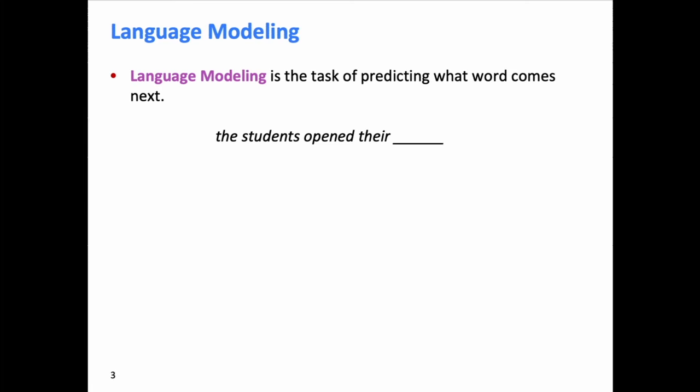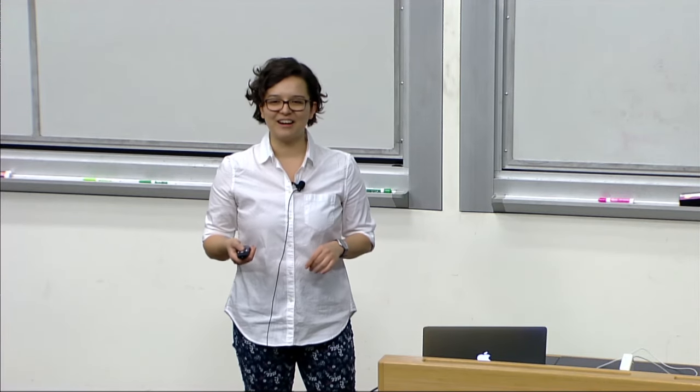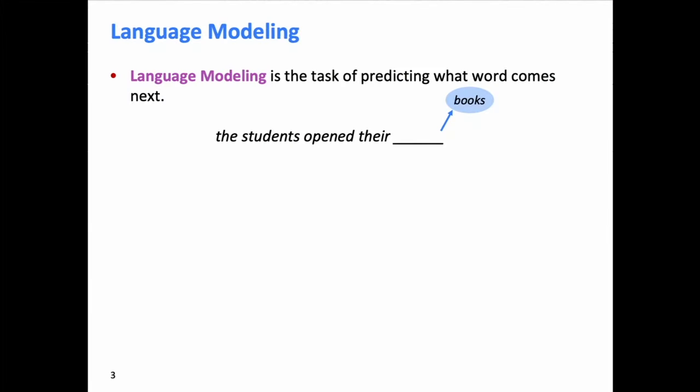Language modeling is the task of predicting what word comes next. Given the piece of text 'the students opened their blank,' could anyone shout out a word that might come next? Book. Mind. These are all likely things — students open their books, laptops, exams, minds. Someone came up with 'minds' just now — it's kind of a metaphorical meaning of opening. So you are all performing language modeling right now. In thinking about what word comes next, you are being a language model.